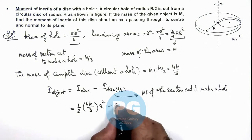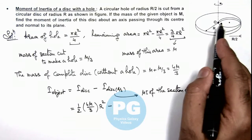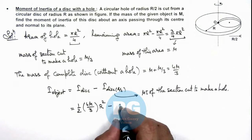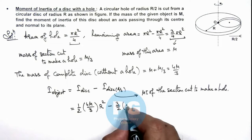As for a disc about a tangential axis normal to its plane, moment of inertia is given by (3/2) multiplied by...